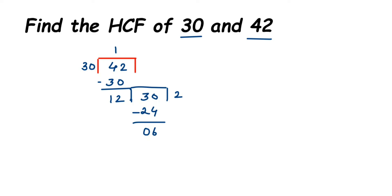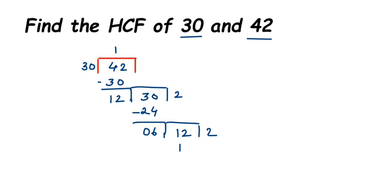Now 6 becomes the divisor, and the previous divisor 12 becomes the dividend. Dividing 12 by 6: 6 × 2 = 12, subtract and we get remainder 0. We stop here. The HCF is whatever was the divisor in the last step — here that's 6.